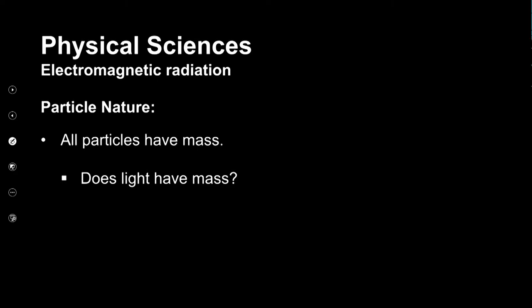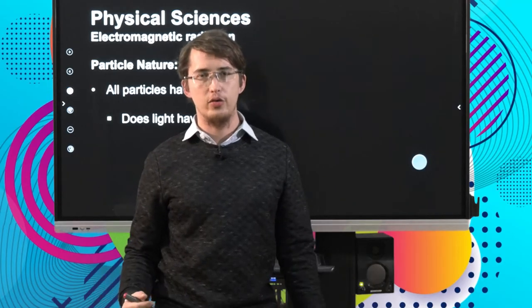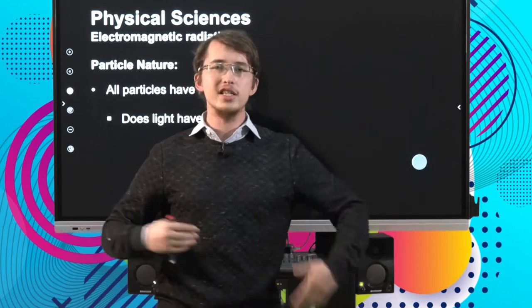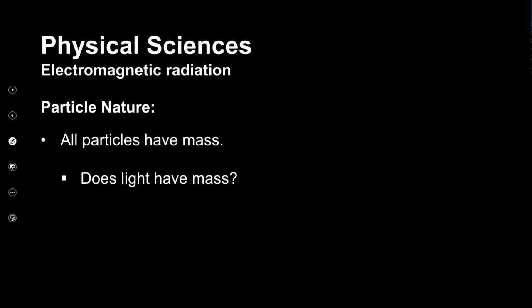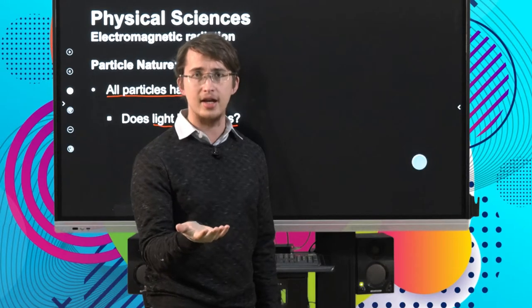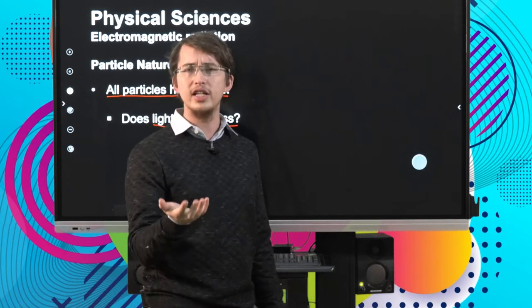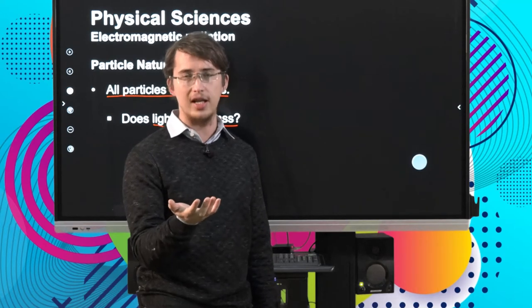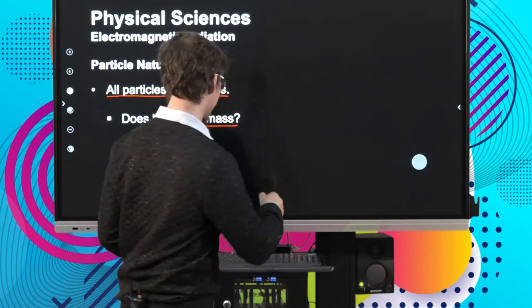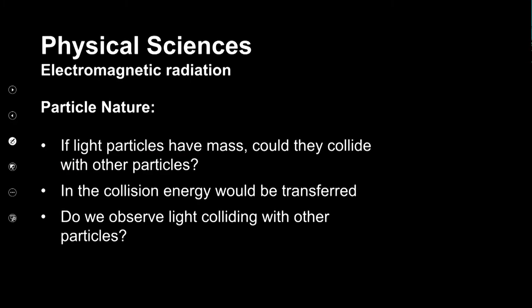What about the particle nature of electromagnetic radiation though? We've been focused on the waves, so where does the particle aspect come in? Well, we already said that all particles have some mass — does this mean that light has a mass? If I stand here in this room and hold my hand out with light shining on it, am I holding something with mass? It certainly doesn't feel like it. So what's going on here?